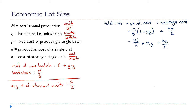So the formula for total cost is: mf/q + mg + kq/2. I want to emphasize that m, f, g, and k are all constants — the marketing department tells us m, the production department knows f, and g and k are known. The only variable on the right-hand side is q, the batch size. So I'll write this as T(q) = mf/q + mg + kq/2. Now we're home free: to minimize T, we differentiate and set the derivative equal to zero.